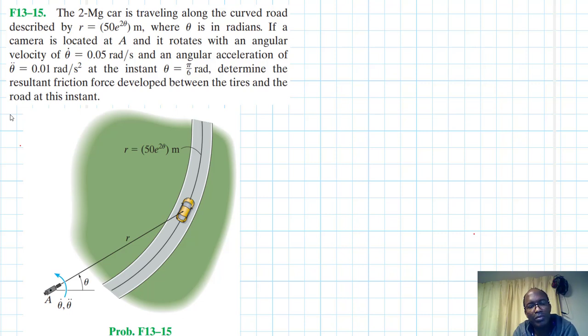This problem is coming from Engineering Mechanics and Dynamics, 14th edition by R.C. Hibbeler. We have been asked to determine the resultant friction force developed between the tires and the road at the instant theta equal to pi over 6.